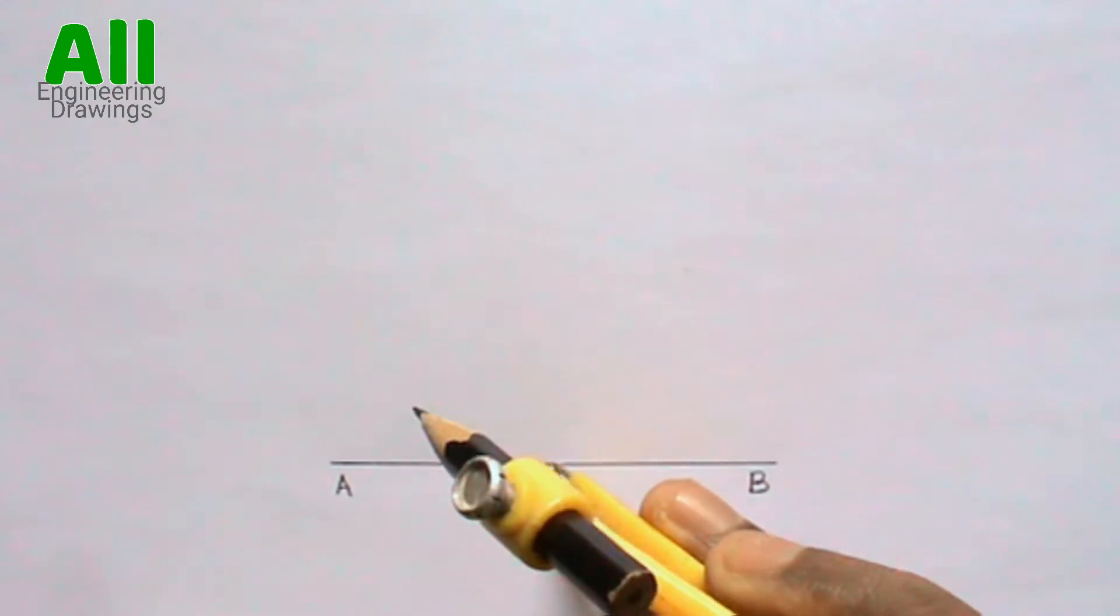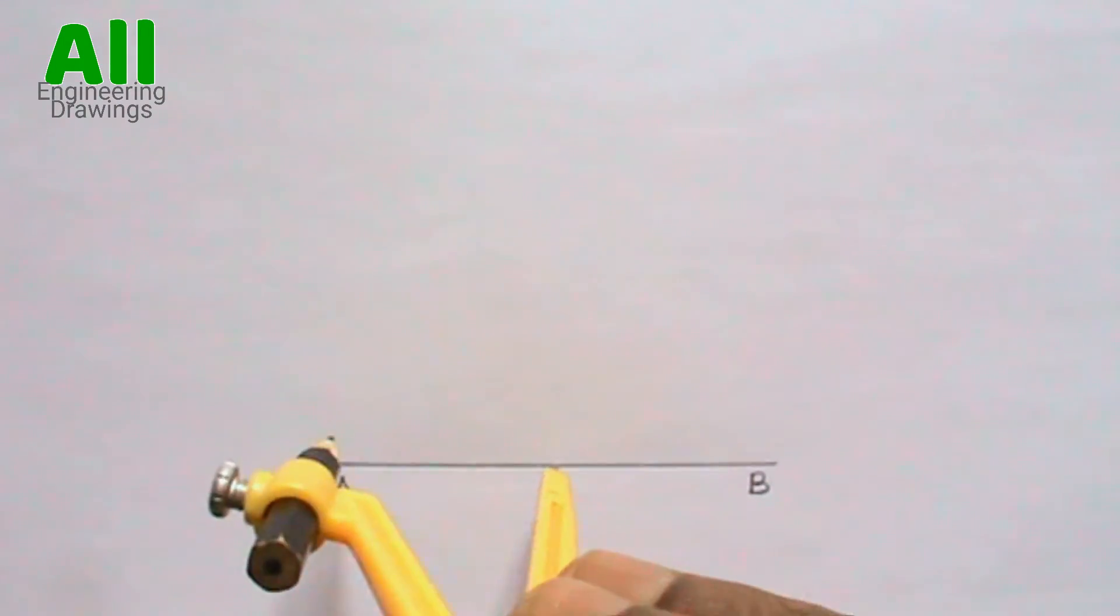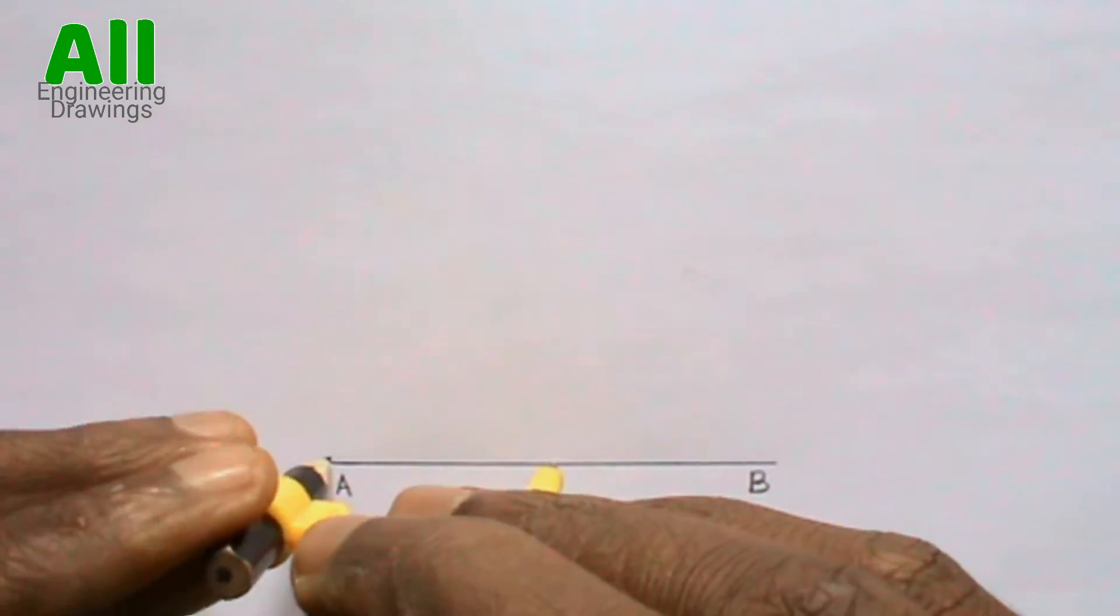After that, place your compass on the points you marked. Then you can now draw a semi-circle on line AB.